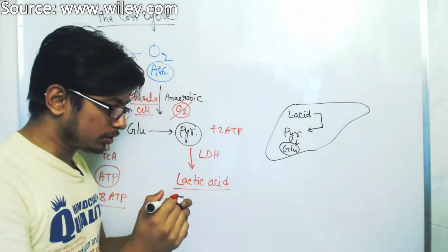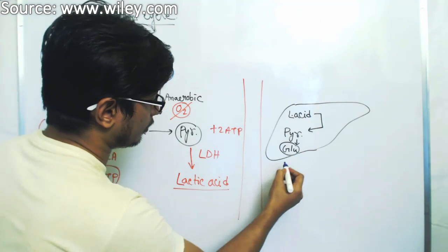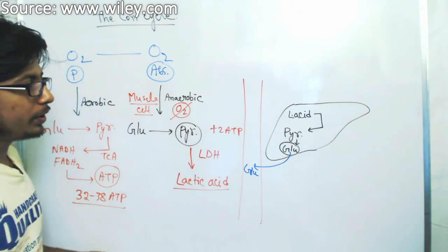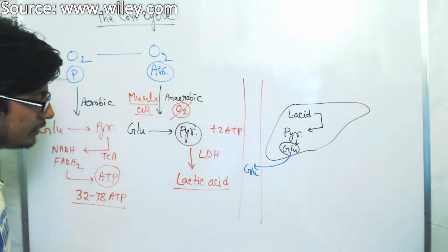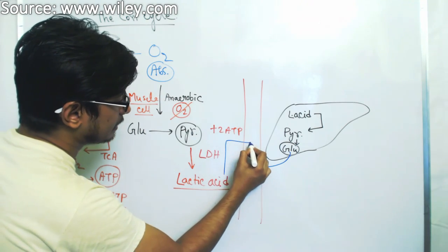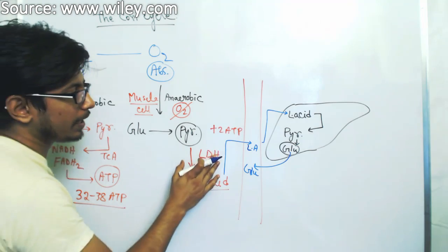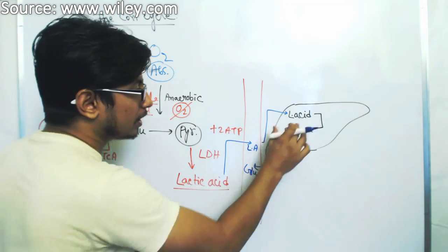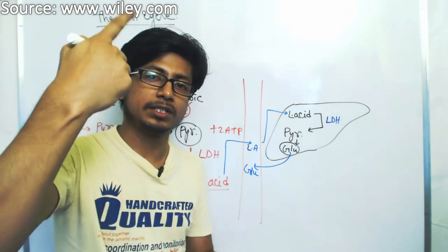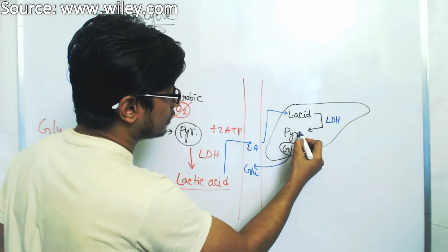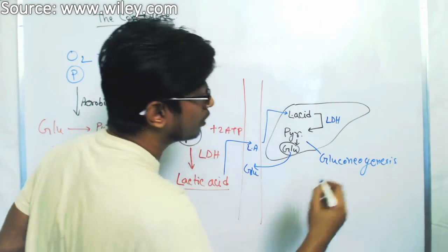The liver converts lactic acid into pyruvate and then pyruvate into glucose. Once it produces glucose, it can release the glucose into the bloodstream. So what happens is the lactic acid produced in the muscle is taken into the blood, transported through the bloodstream to the liver, where the liver converts lactic acid to pyruvate using lactate dehydrogenase — in a reverse step — and then through sequential stages converts pyruvate into glucose via gluconeogenesis.